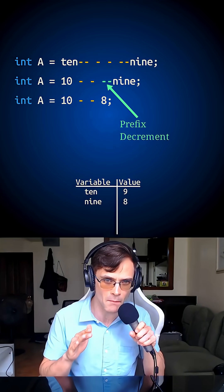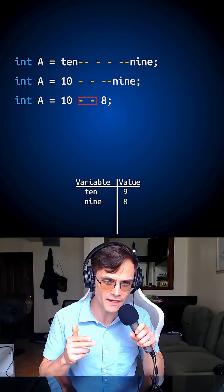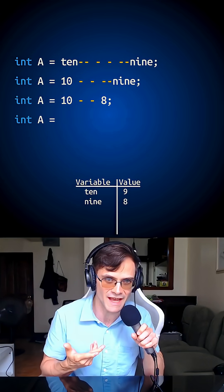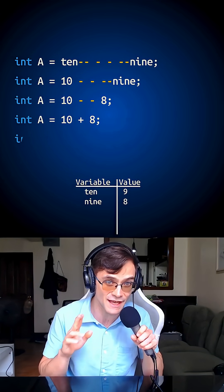So then I've got 10 minus negative 8. Minus negative is, of course, the same as just adding, so I do 10 plus 8 to get 18 here.